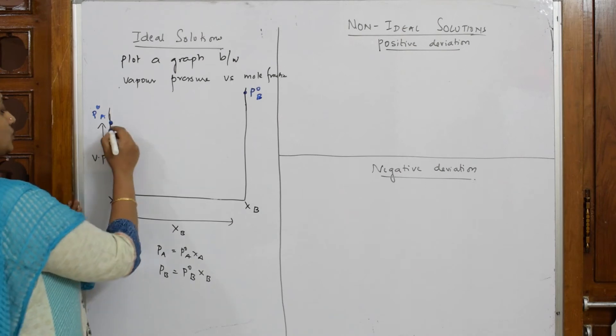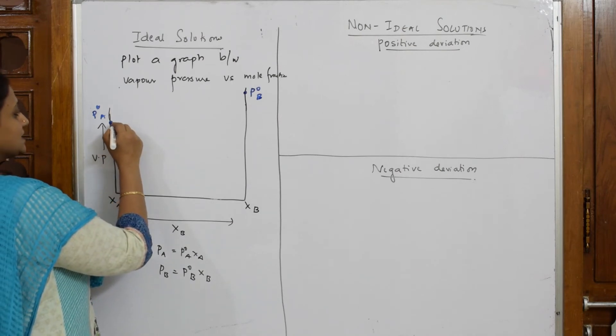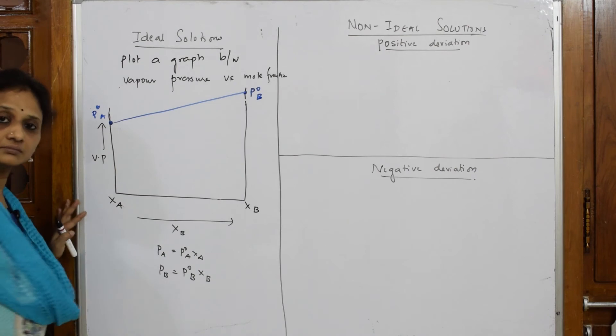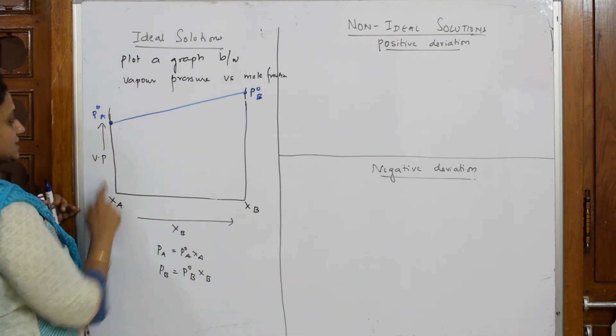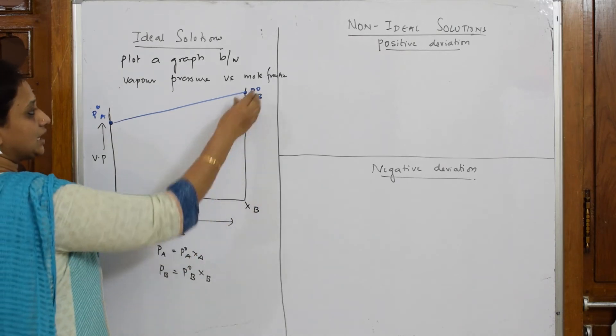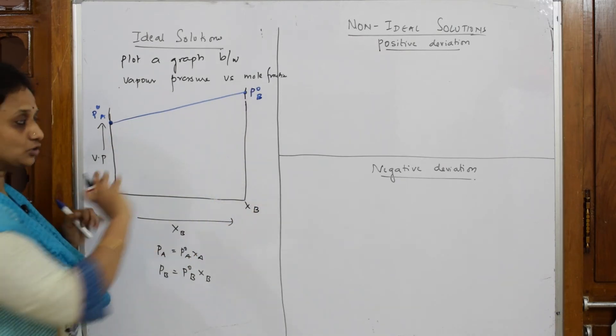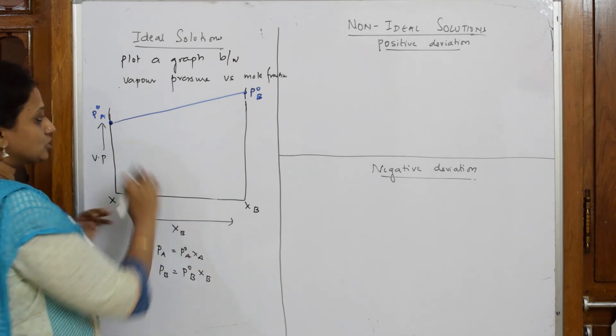So now what are you going to do? You are going to just join this line like this. Now, this XA and PA, XB and PB, if I have to write the total pressure, this is complete. P naught B, benzene and toluene.